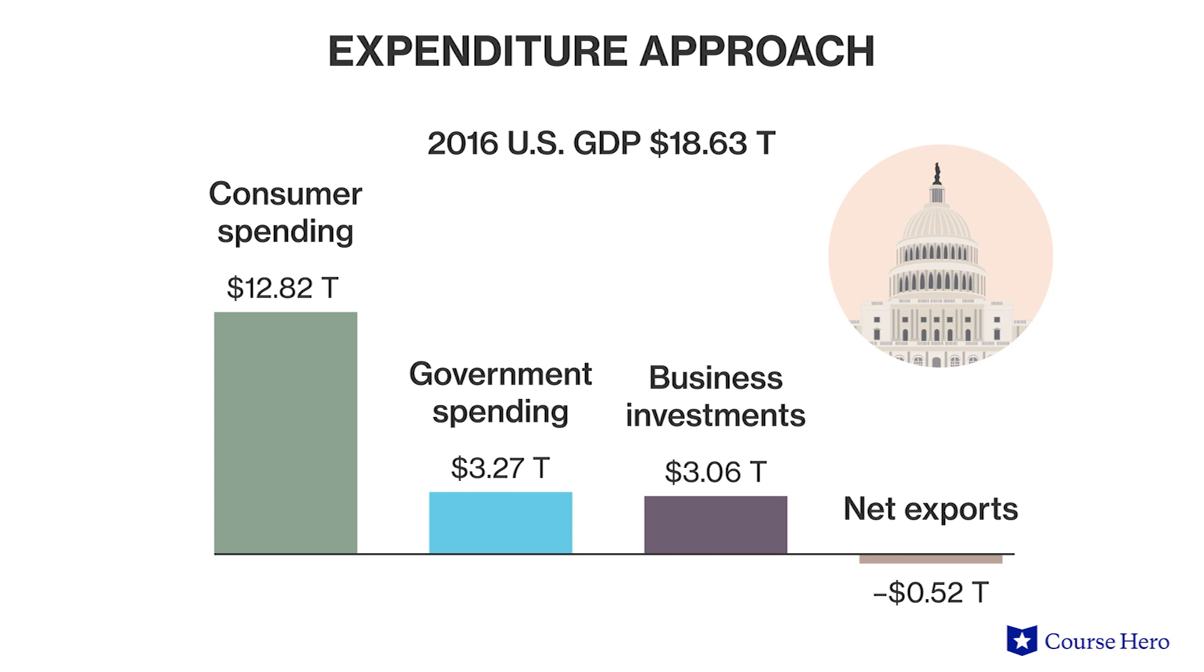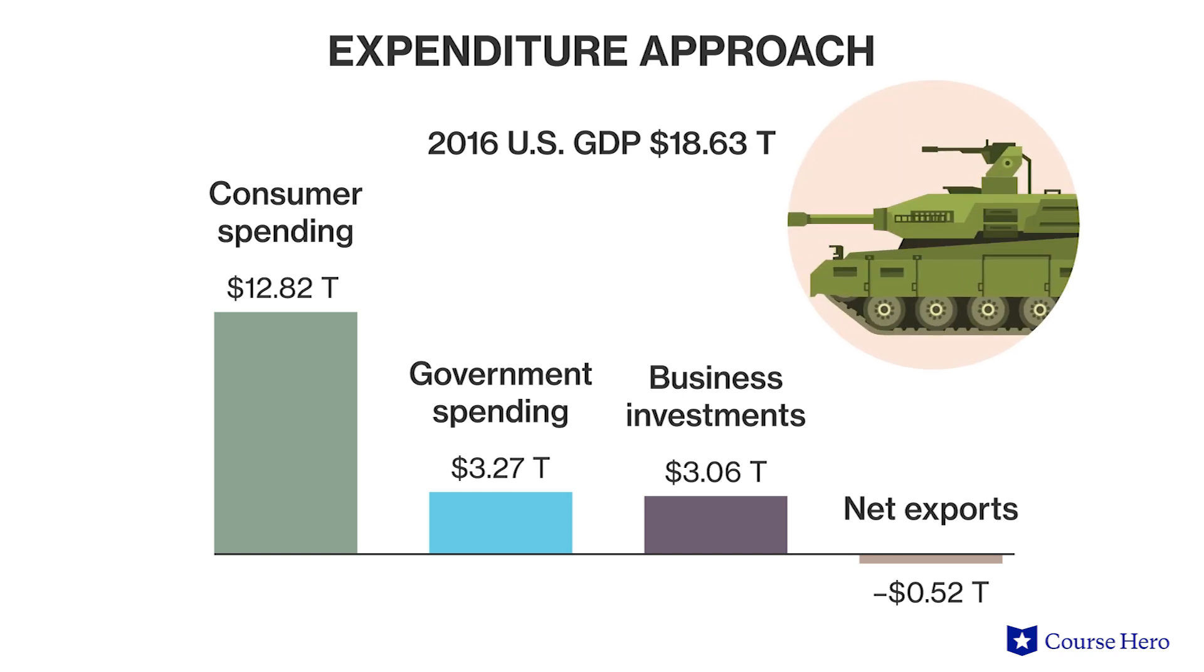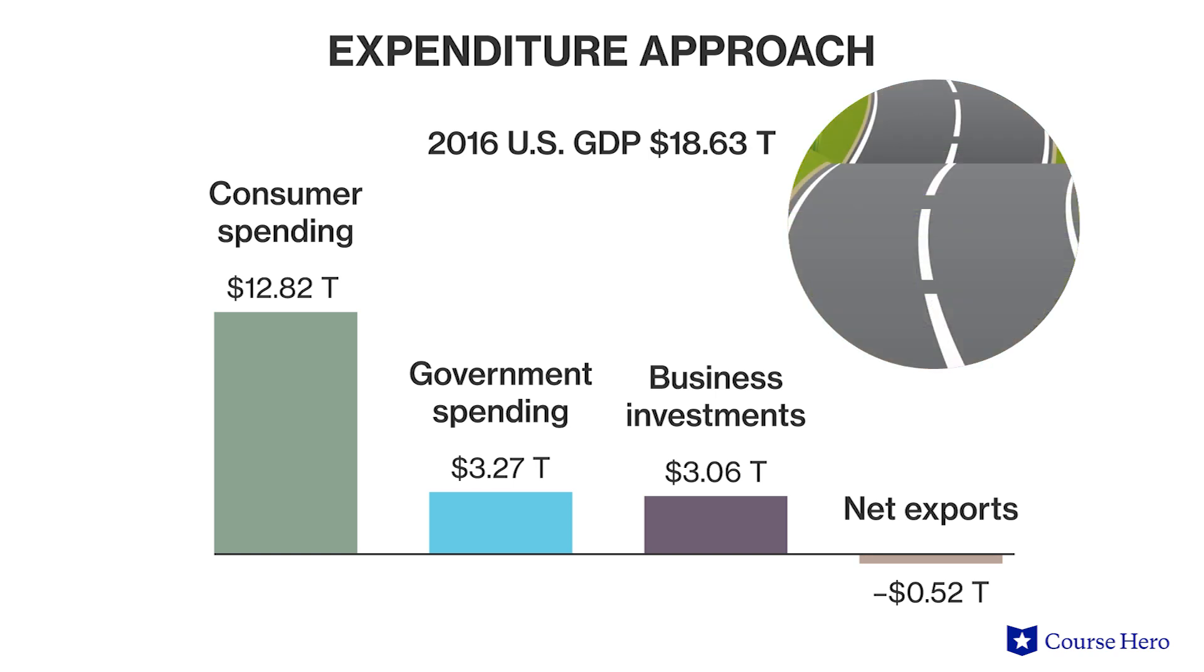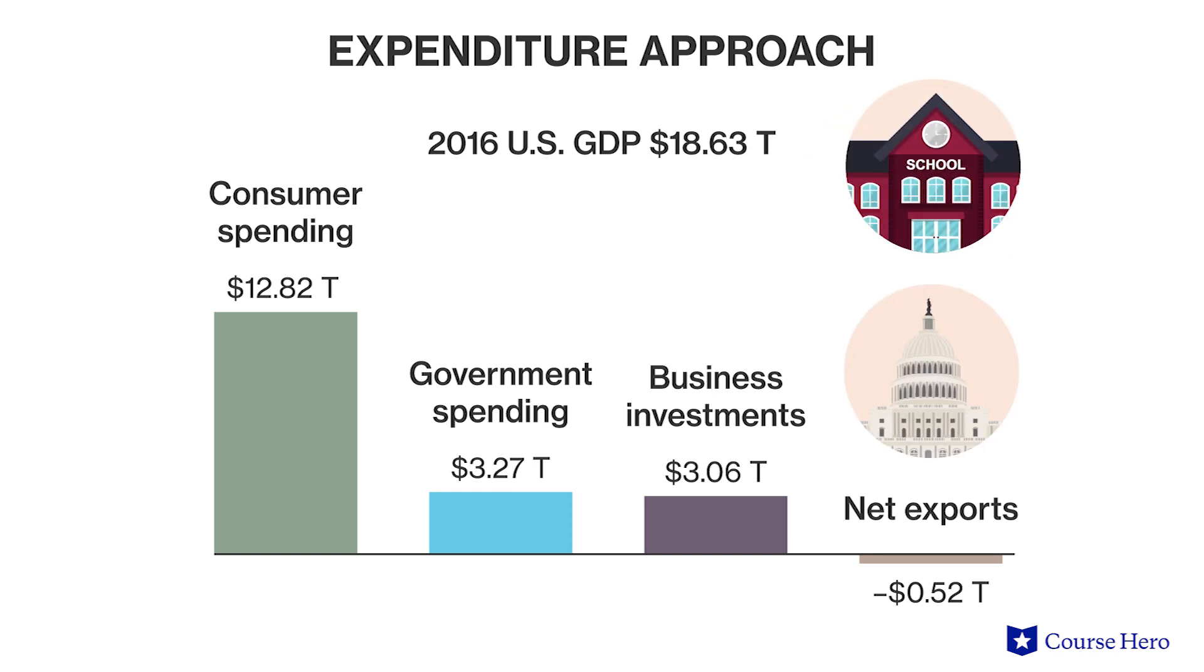Government spending includes all expenditures from federal, state, and local governments. New military equipment, spending on highways, infrastructure, and the building of new schools and government buildings are all examples of government spending. Government spending accounts for approximately 20% of GDP.